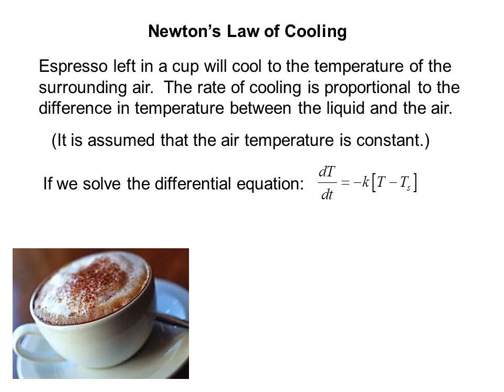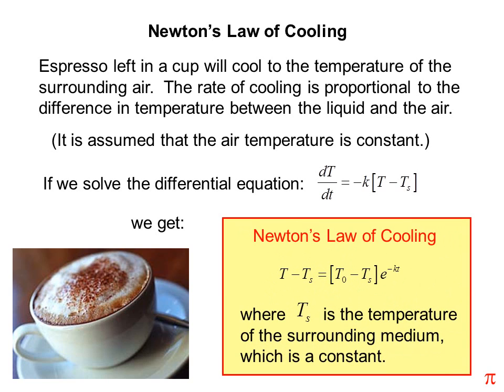If we solve the differential equation dT/dt equals negative k times T minus T sub s, where T sub s is the constant temperature of the surrounding air, T minus T sub s equals T sub 0 minus T sub s times e to the negative kt, where T sub s is the temperature of the surrounding medium, which is a constant.